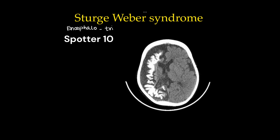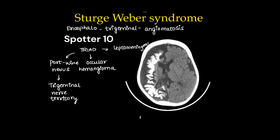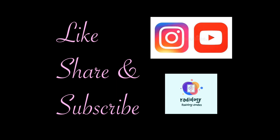The last case is Sturge-Weber syndrome, also known as encephalotrigeminal angiomatosis. It is a triad of port wine nevus occurring in the trigeminal nerve territory usually on the face, ocular hemangioma, and leptomeningeal hemangiomas. As shown on the CT image, these hemangiomas calcify, causing gyral calcification and gyral atrophy — the classic tram-track calcification. Later it progresses to hemiatrophy, and calvarial hyperostosis can be seen on the same side. Like, share and subscribe to Radiology Doodles on YouTube and Instagram for more such videos.